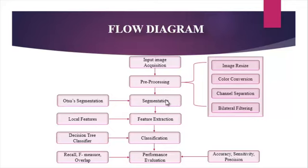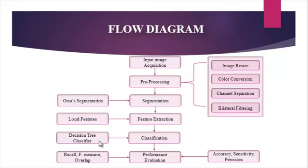After pre-processing, the segmentation of the macular region is done using the auto-segmentation method. The vessel thickness in the macular region is also calculated. After that, features such as thickness, size, area, and centroid — which are called local features — are extracted from the image. By using these features, the classification step is performed using the decision tree classifier.